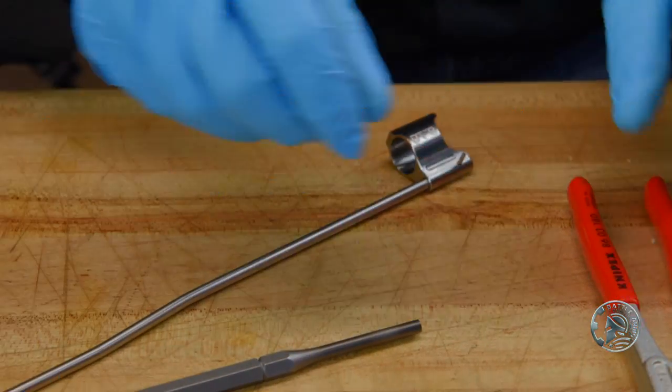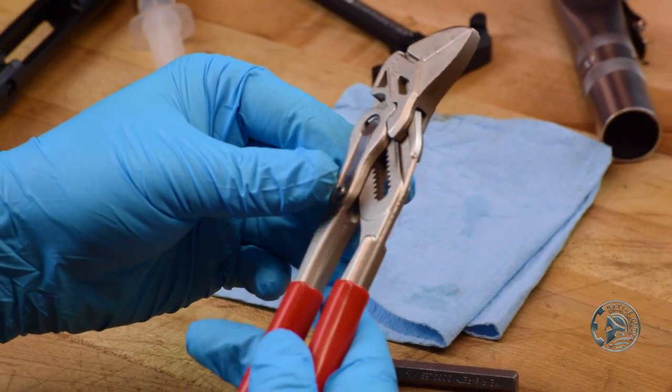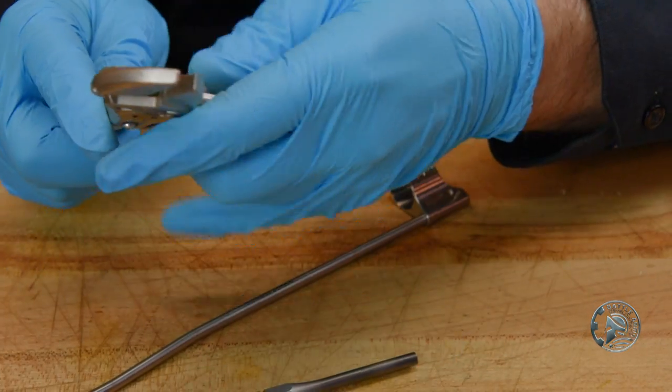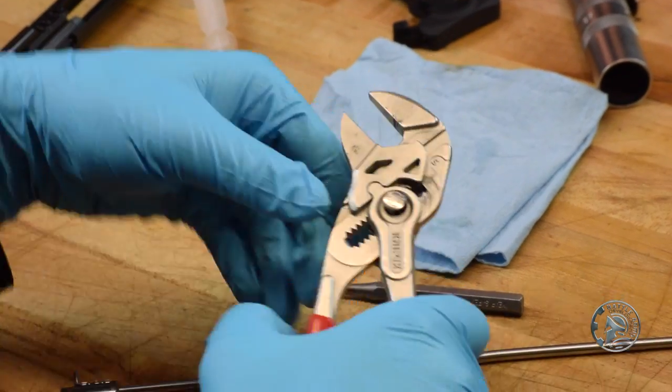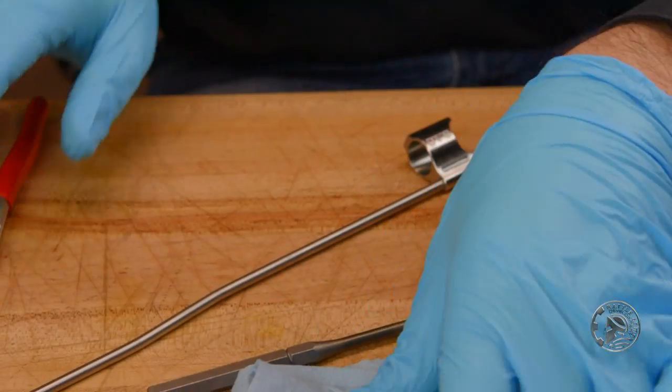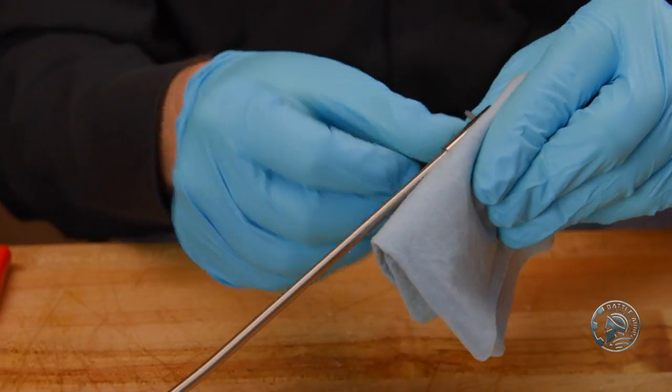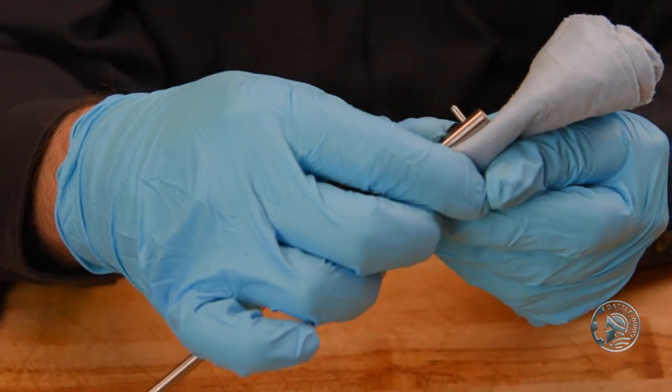Now we're going to take our parallel jaw pliers. I'm going to open these up and using a shop cloth or other non-marring towel, place that on the opposite side.